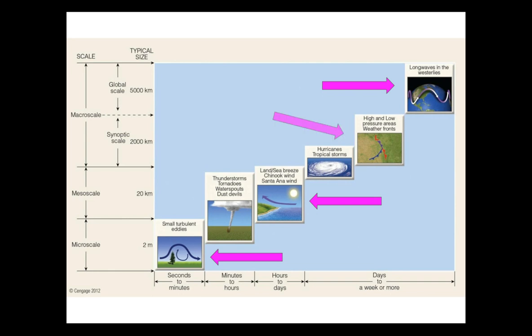And then we have synoptic scale, which refers to weather systems that move over a large but generalized area.